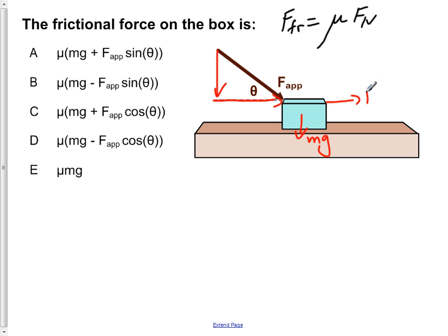So we have F applied, the x component to the right, and we have the y component of F applied pointing downward. Now the resultant, due to the interaction with the forces pushing down on the surface, results in a normal force pointing in the positive y direction.